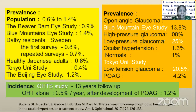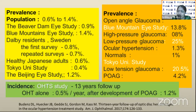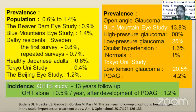If we look at the prevalence in the normal population, various studies have shown it ranges between 0.6% to 1.4% only. In the glaucoma population, the open-angle glaucoma Blue Mountain Eye Study showed prevalence of disc hemorrhage was 13.8%, but it was more prominent in low-pressure glaucoma at 25%. Similarly, a Japanese study also showed a very high prevalence — 20.5% — in low-tension glaucoma.